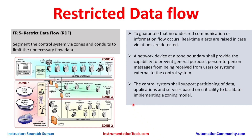The control system should support partitioning of data, applications, and services based on criticality to facilitate implementing a zoning model. We need to assess criticality — which system is more critical. For example, PLCs and databases are more critical than the corporate zone because the corporate zone does not directly impact process parameters or production. Whatever devices are closest to the process control are the most critical and time-sensitive. If communication goes off between an application server and a field location, it will directly impact production.